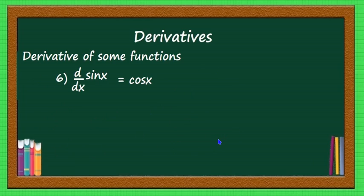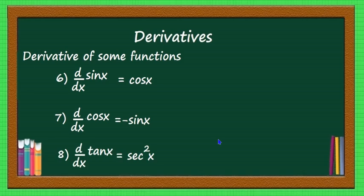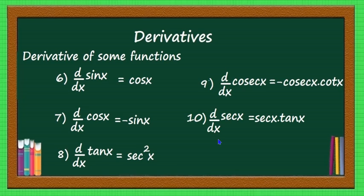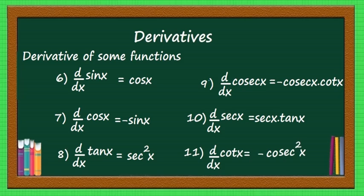Next are the derivatives of trigonometric functions. You should remember the derivatives of all six trigonometric functions: d by dx of sin x is equal to cos x; d by dx of cos x is equal to minus sin x; d by dx of tan x is equal to sec square x; d by dx of cosec x is equal to minus cosec x into cot x; d by dx of sec x is equal to sec x into tan x; and d by dx of cot x is equal to minus cosec square x.